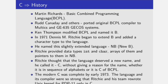Kennedy and others ported a BCPL compiler to multi-extended GE 635 systems. Then Kane Thompson modified BCPL and gave it a new name, B. In 1971, Dennis M. Ritchie started extending B and added a character type to the language.